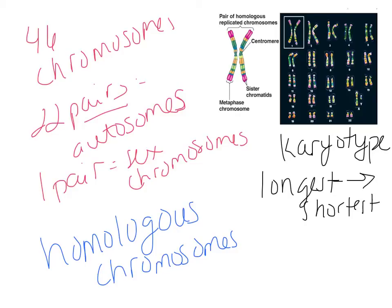The sex chromosomes are always the very last pair — pair number 23. They may not always match: girls have two X chromosomes so they match, but boys have an X and a Y, so they don't match like the autosomes do. The karyotype picture can help you determine if there's a genetic abnormality or if something has happened to the chromosomes.